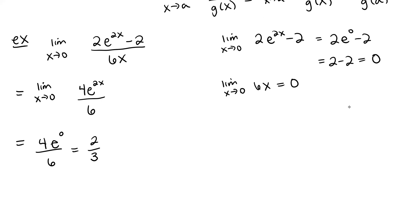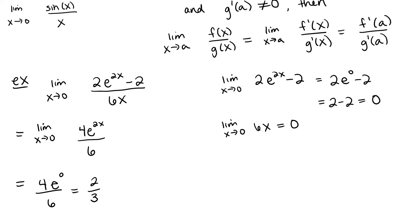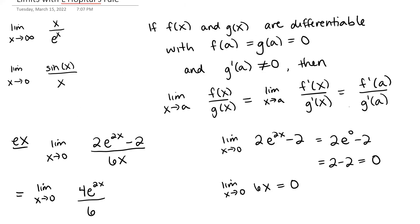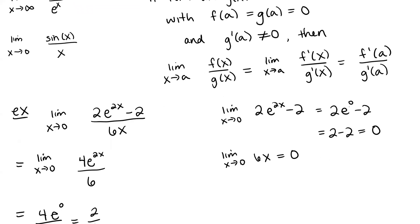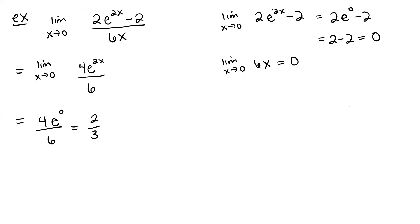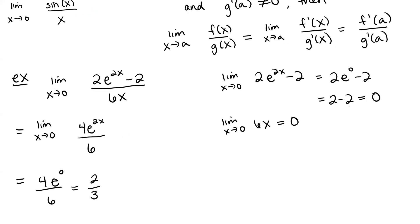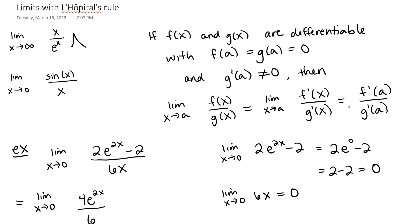So that is an example where we just applied L'Hôpital's Rule. We can use this for the form 0 over 0, but we can actually use this a little bit more generally. We can also use this for if we have infinity over infinity, like we had in the first example. So if we have a limit that looks like infinity over infinity, we can take the derivative of the top and the derivative of the bottom.